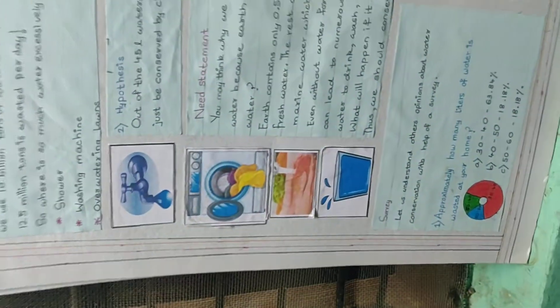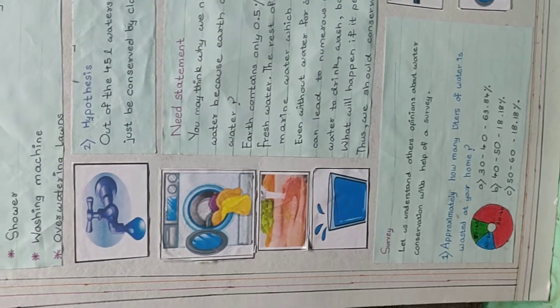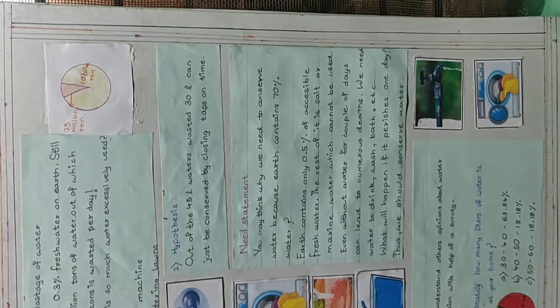Shower work, washing machines, and over-watering the lawns are some of the important reasons for water wastage. Hypothesis: Out of the 45 litres of water wasted, we can conserve 30 litres of water by just closing taps on time.